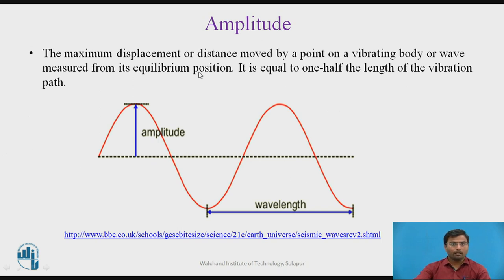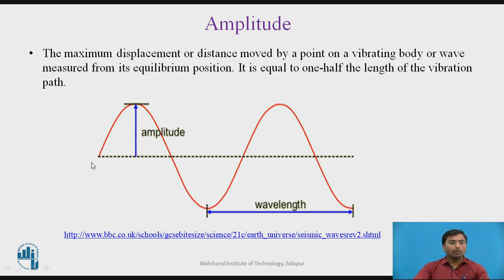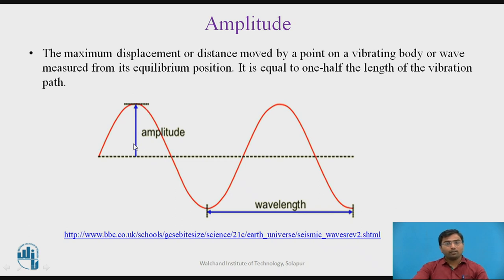Amplitude is the maximum displacement or distance moved by a point on a vibrating body or wave, measured from its equilibrium position. In the waveform diagram, the equilibrium position is the baseline, and we can refer to amplitude as the height of the wave — the displacement from the equilibrium position. Amplitude equals half the length of the vibration path, which is the height of the crest point.